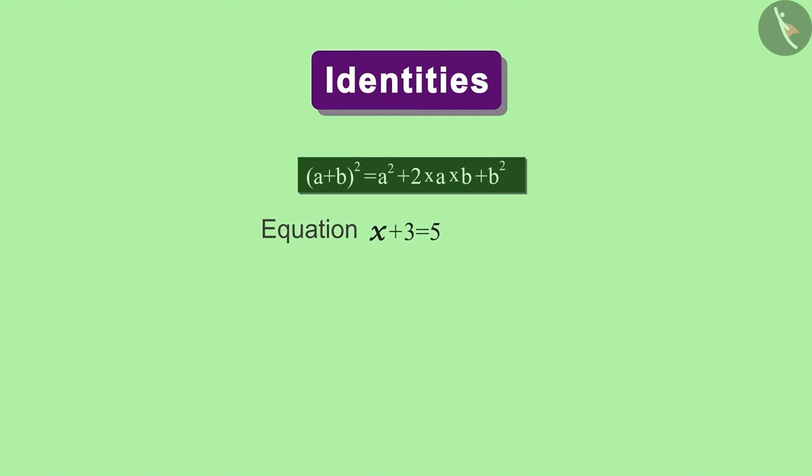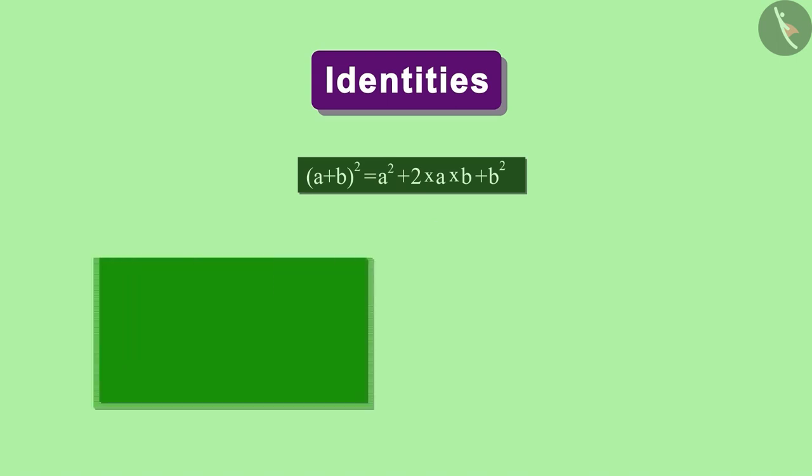We have seen this kind of equations before. Solving this equation gives us only one value of X, which is 2. But we have seen that this equation is true for two different values of A and B.